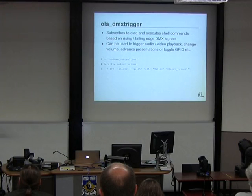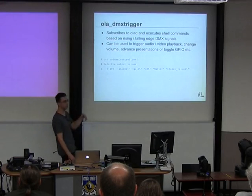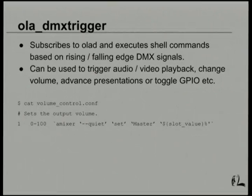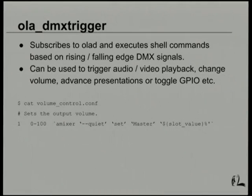We've seen how OLA can generate data and control lights. The other interesting part is receiving DMX data to trigger things on stage. As part of the framework, there's a program called OLA-DMX-Trigger: you define a config file and based on the DMX values it receives, it execs other programs. You can use this to toggle presentations, control GPIO pins on the Pi for solenoids or relays, or set the volume playback on a Raspberry Pi. These USB devices can be put into DMX receive mode and plugged in like any other DMX device in a daisy chain.